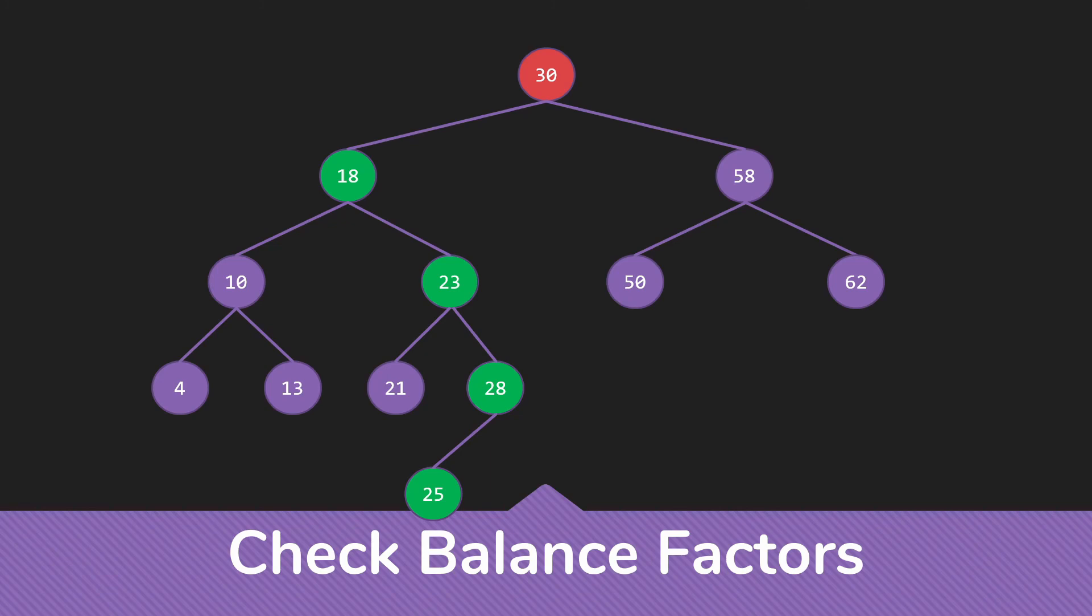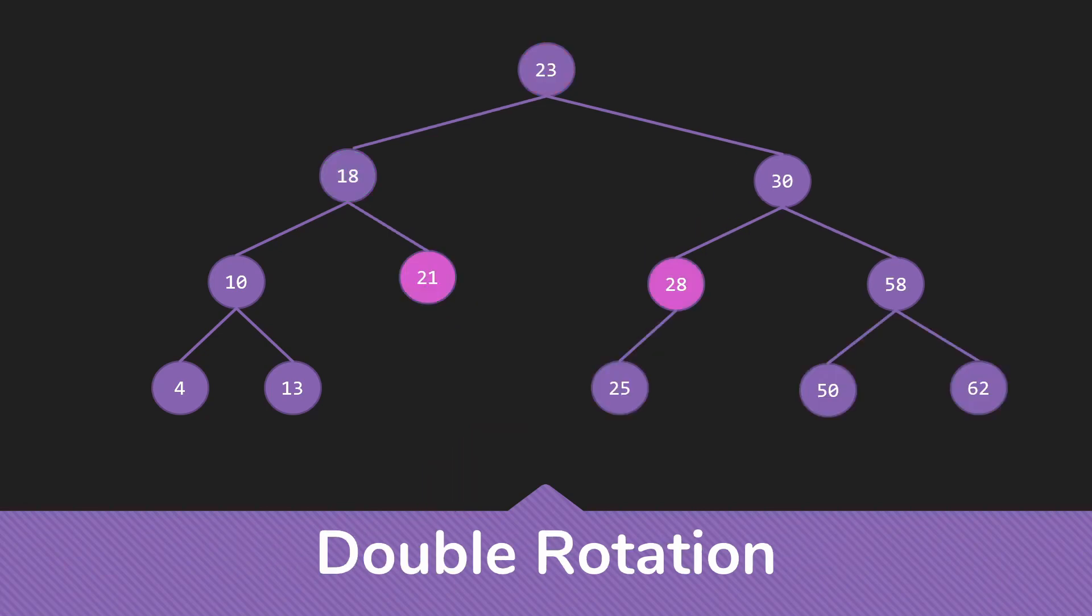So this means we have multiple children to deal with. Because 23 is now going to become the root. 18 and 30 are going to become its left and right children. Which means the 21 and the 28 need somewhere to go. And what will happen is the 21 will become the right child of the 18. And the 28 will become the left child of the 30, like so.